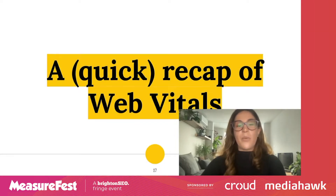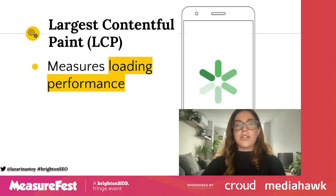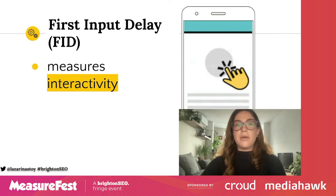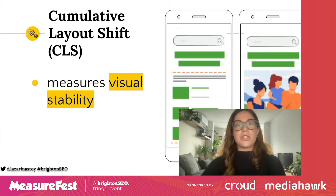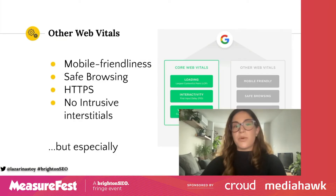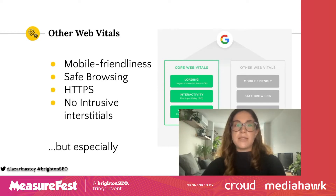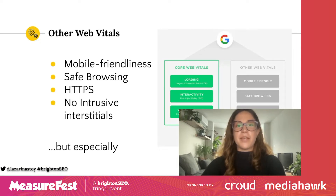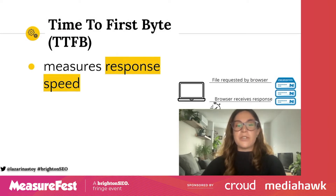Let's quickly recap what the three metrics measure. Largest Contentful Paint measures loading performance — it should occur within 2.5 seconds of when a page first starts loading. First Input Delay measures interactivity — it should be less than 100 milliseconds. Cumulative Layout Shift measures visual stability — you should maintain a CLS of less than 0.1. The other web vitals include mobile friendliness, safe browsing, HTTPS, and no intrusive interstitials. One not commonly discussed but quite important is Time to First Byte, which measures response speed — this should be around 200 to 500 milliseconds.